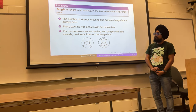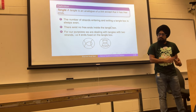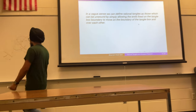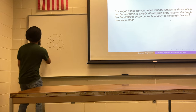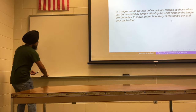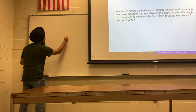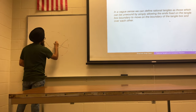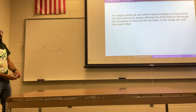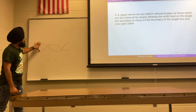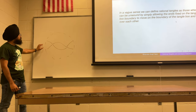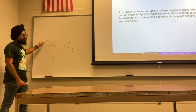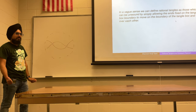A tangle is more general than a rational tangle. In a vague sense, a rational tangle is one where, if you allow the fixed ends to move, you should be able to unwind it. For tangles in general, you cannot move the ends on the tangle box, but allowing that movement distinguishes rational tangles.